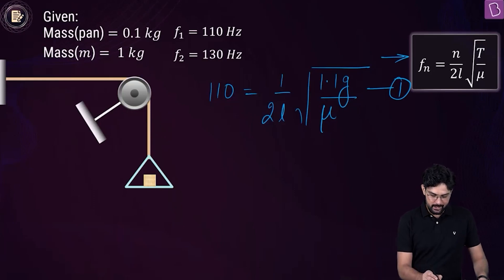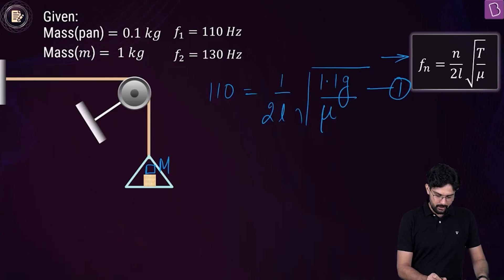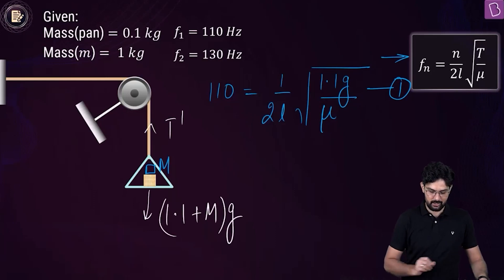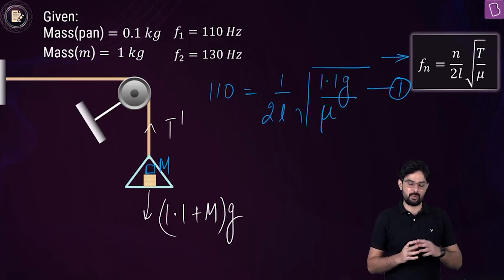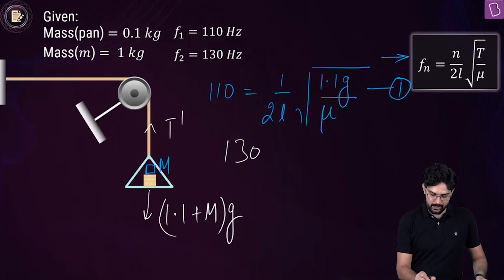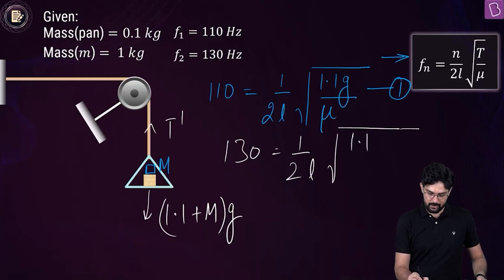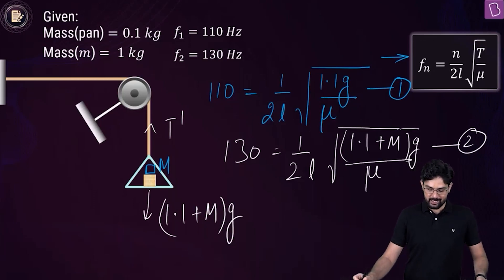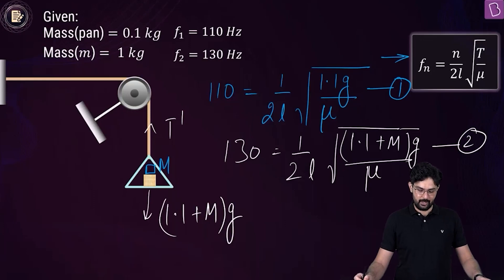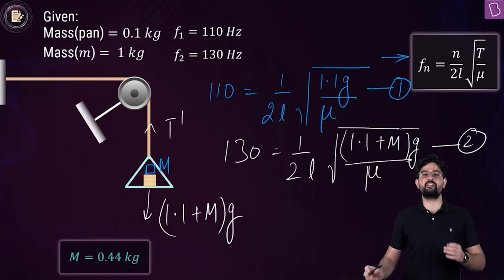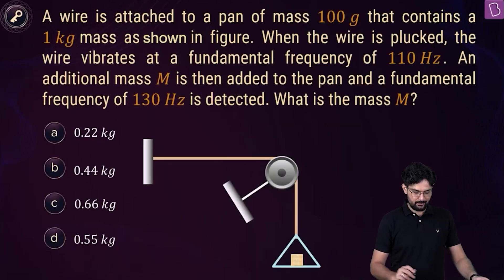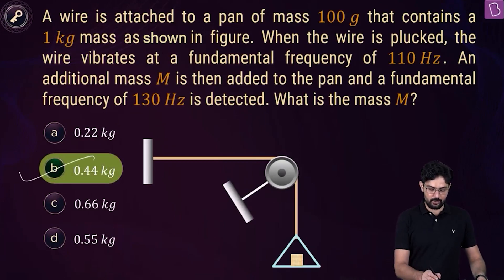After adding mass M (in kg), the tension becomes T' = (1.1 + M)g. So 130 = 1/(2L) × √((1.1 + M)g/μ). Using these two equations and simplifying, the value of M comes out to be 0.44 kg. So option B must be the right value of the additional mass M.